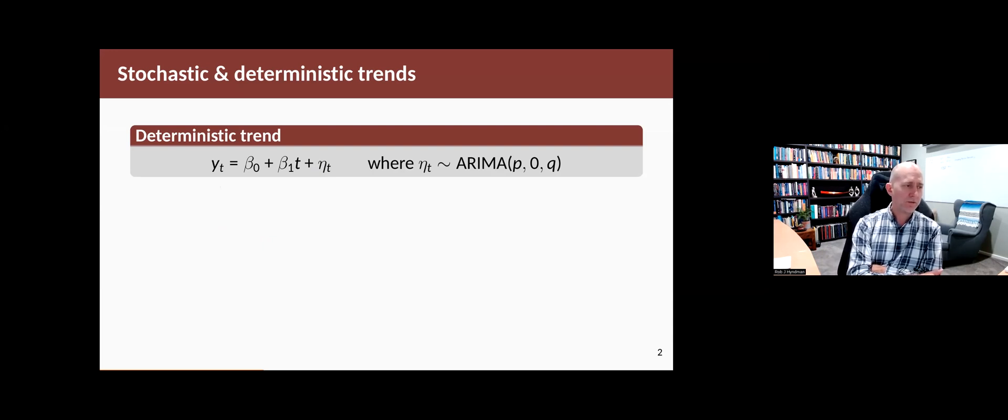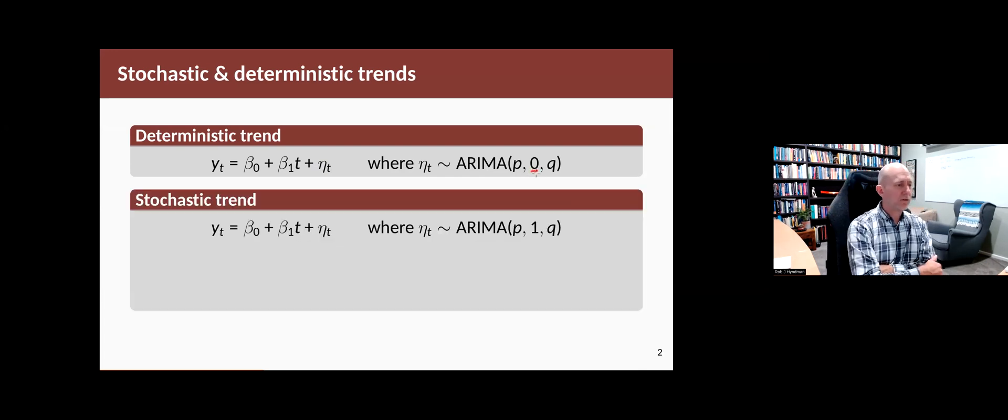So yt equals a linear function of t plus et where et is stationary. There has no difference, so d here is zero. On the other hand, a stochastic trend is exactly the same linear function of time, but the error term has a difference of one. So little d equals one. That's the only difference between the two, but they have quite different properties, which is why they've ended up with different names.